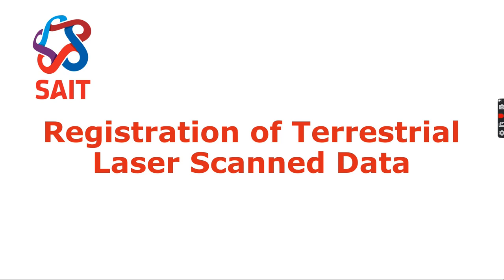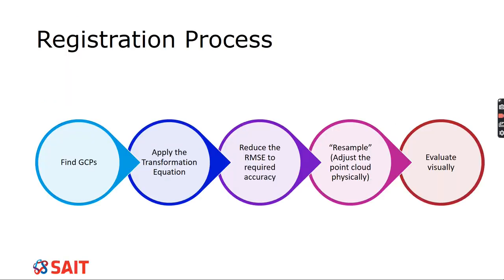Moving to the next topic: registration of terrestrial laser scanning. The registration process involves finding ground control points, applying a transformation equation, reducing the RMSE to the required accuracy, resampling the point cloud so it's physically viewable, and then evaluating it visually. These five steps apply to registration no matter what remote sensing you're doing — this is what we are doing in our registration process, and it's no different from what we did in remote sensing.